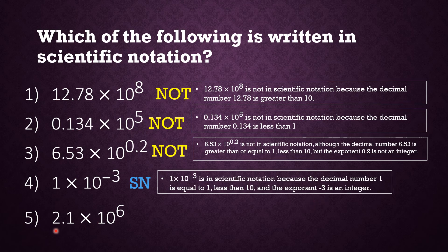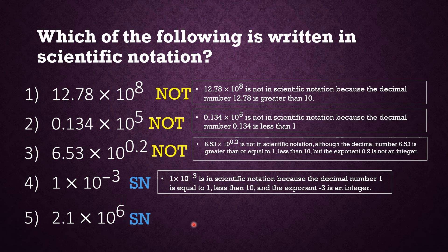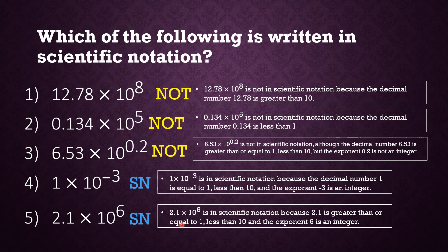Number five: 2.1 is between 1 and 10, including 1, so that is acceptable. And the exponent 6 is an integer, so this number is in scientific notation.